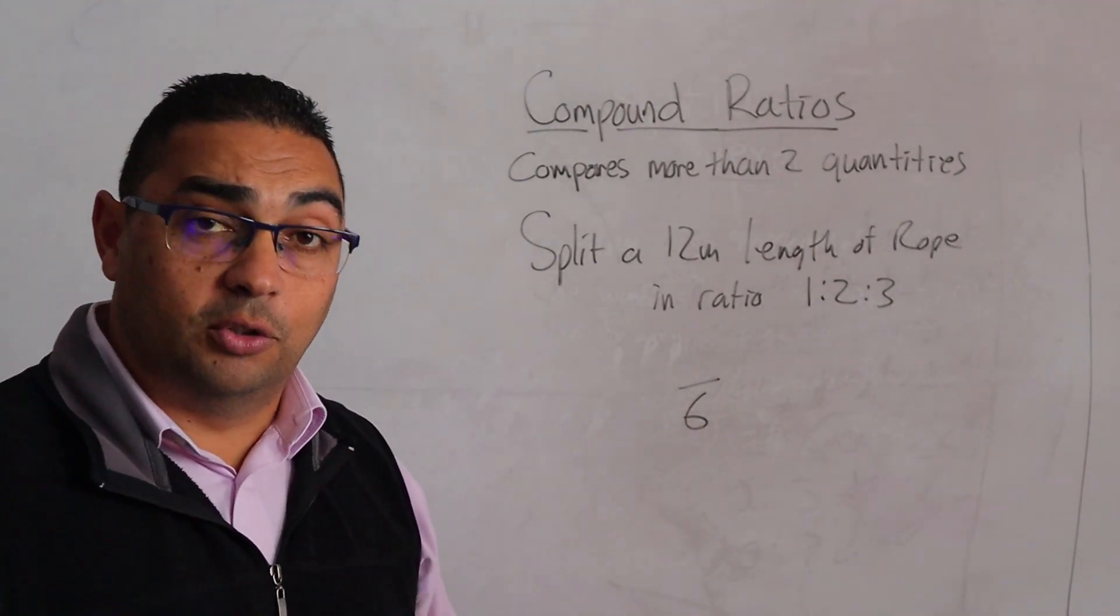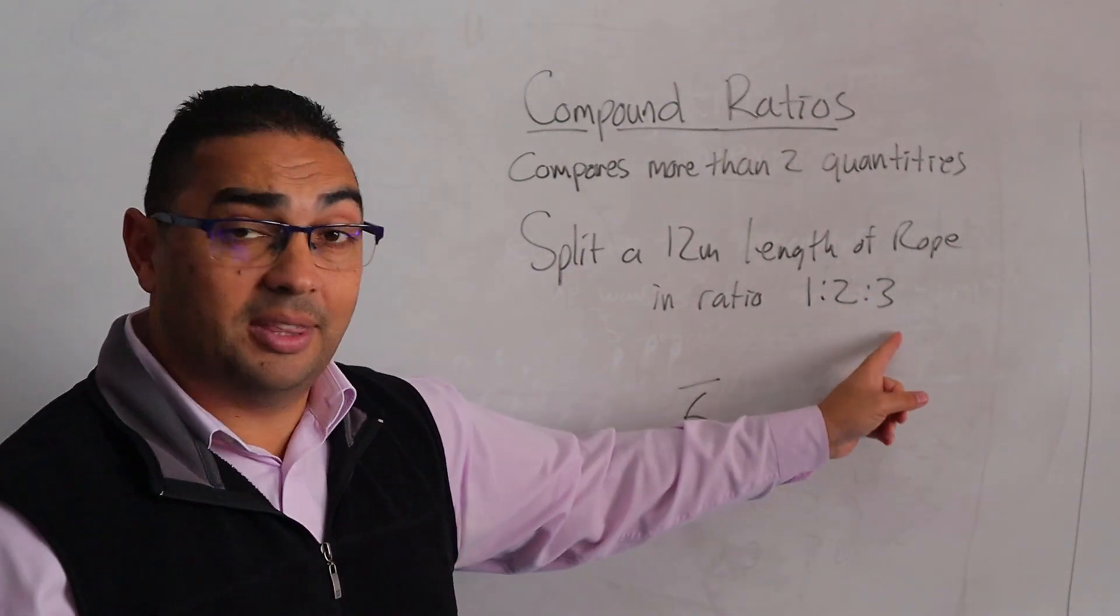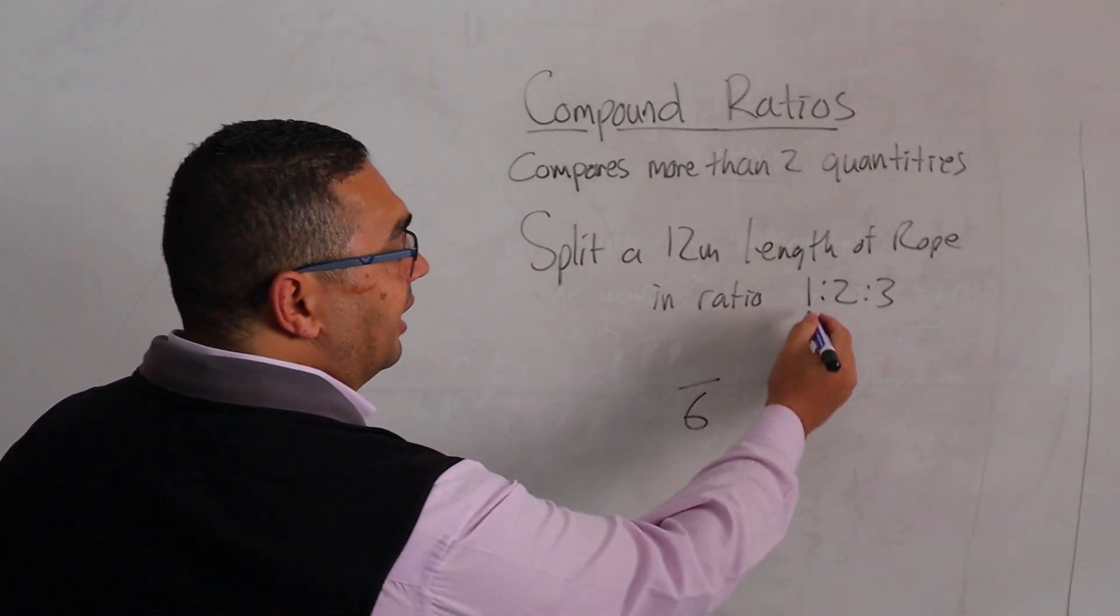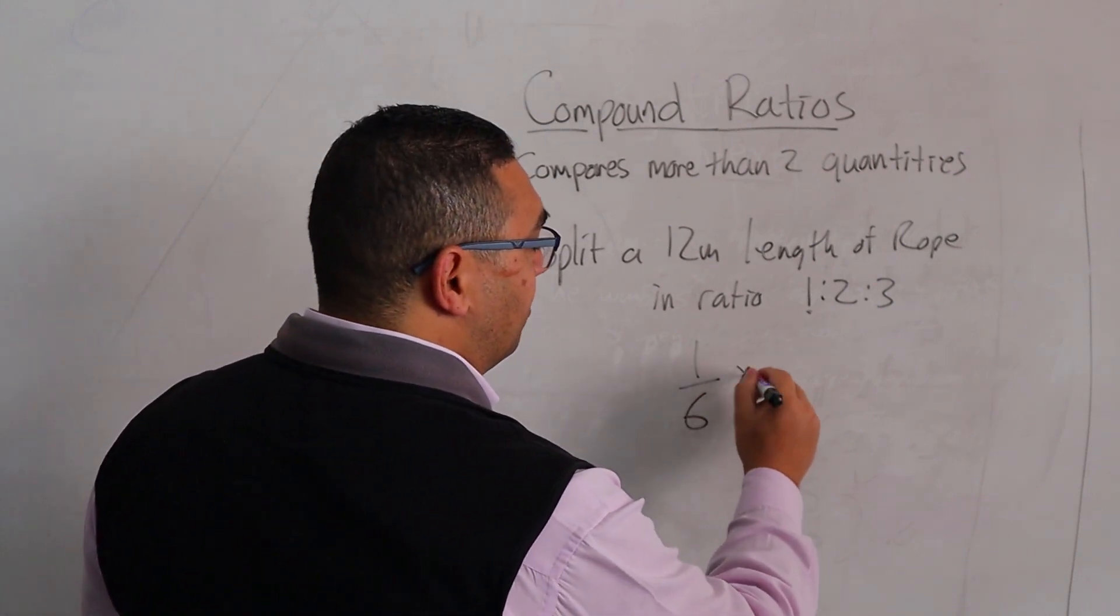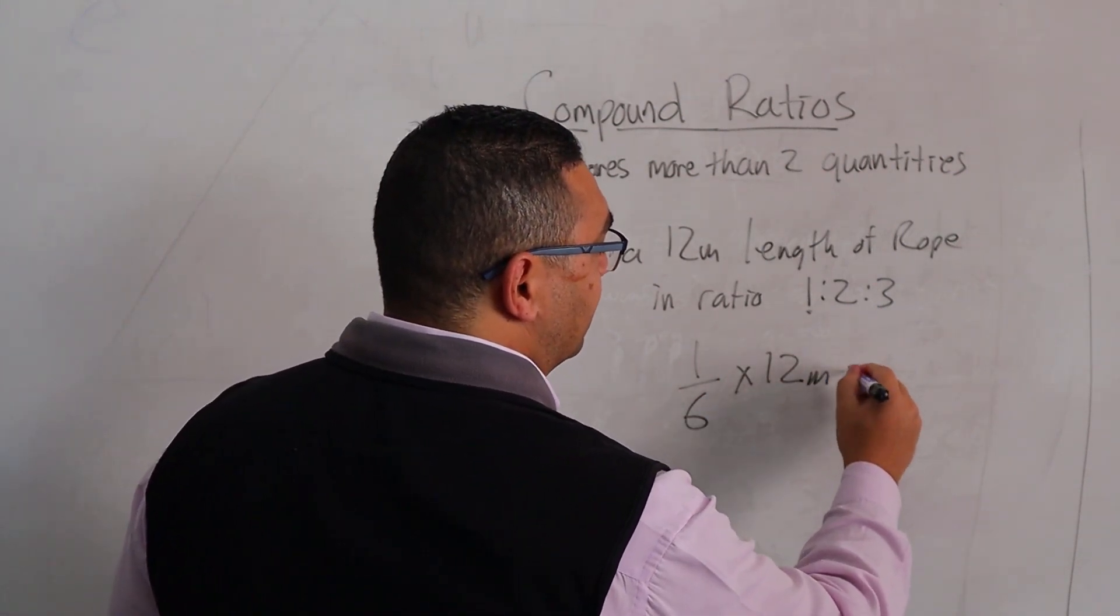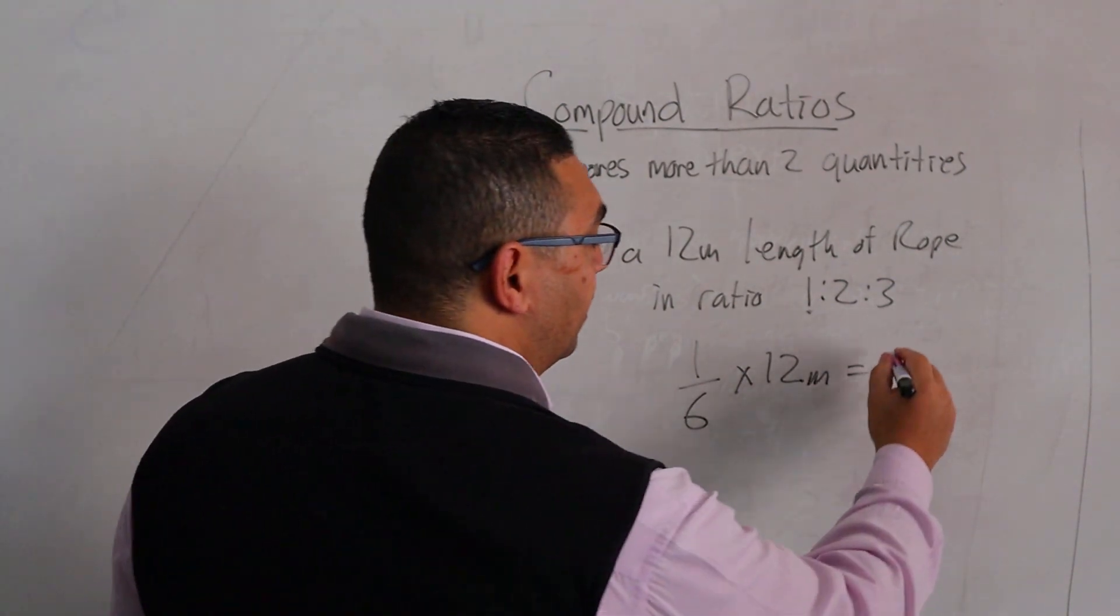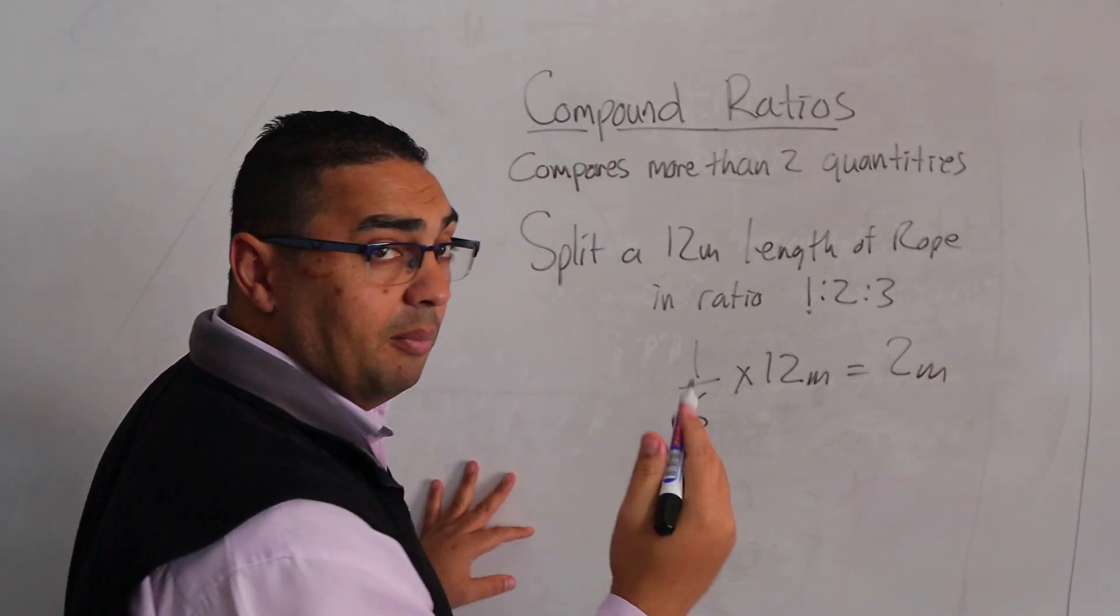What am I going to do now? Well, I'm going to do this three times because I've got three items over here. So I'm going to take my first one and say, well, one part of that six, I'm going to multiply that by the 12 meters, and I'm going to end up with 2 meters.